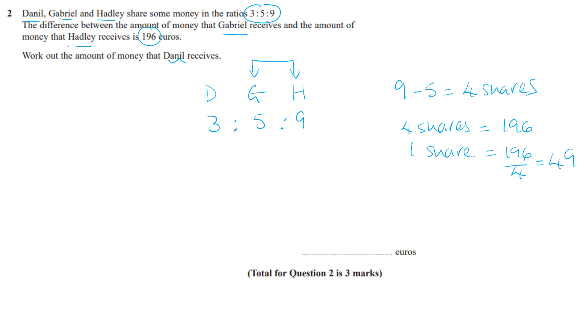Daniel gets 3 shares, so 3 times 49 gives 147.